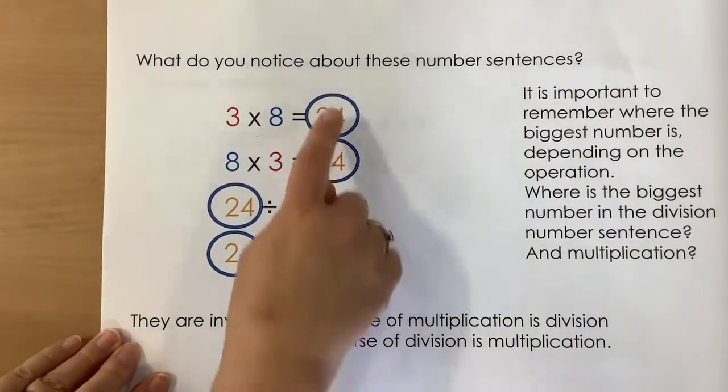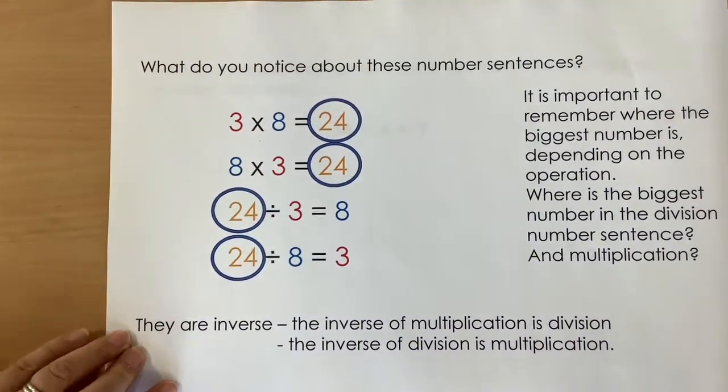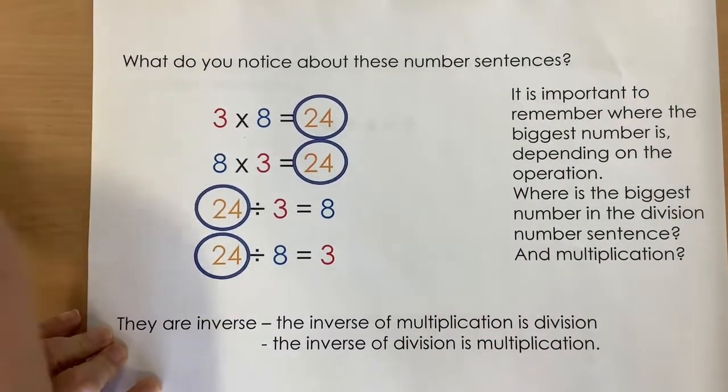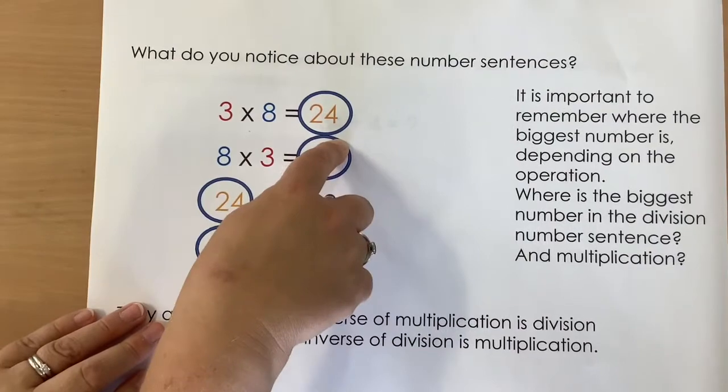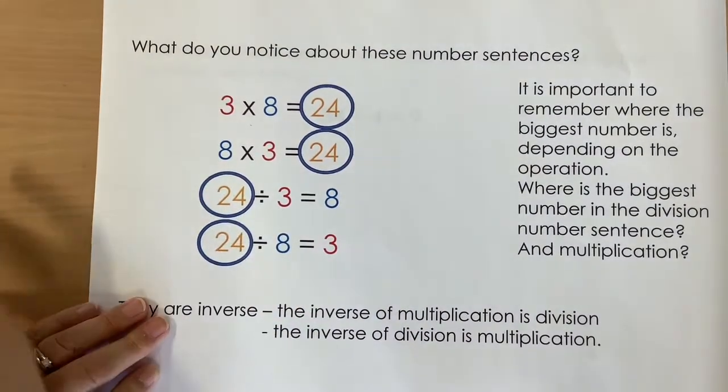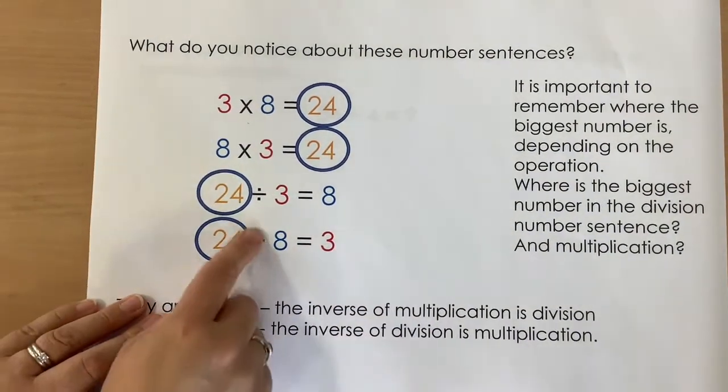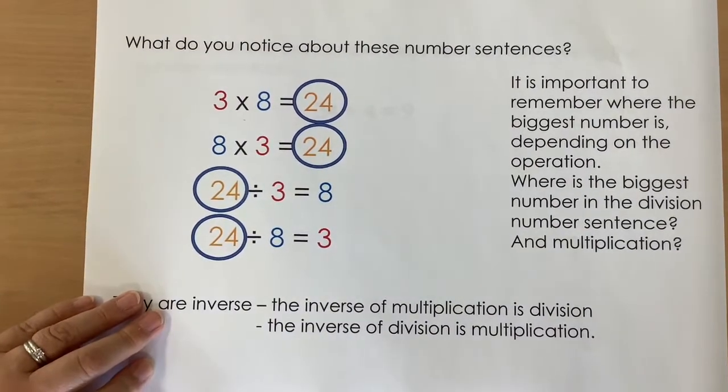And again, when we're multiplying, we're making the number bigger. We're increasing it. So the biggest part of the number sentence is the answer. When we are dividing, we are splitting it, we are making it smaller. So we start off with the bigger number.